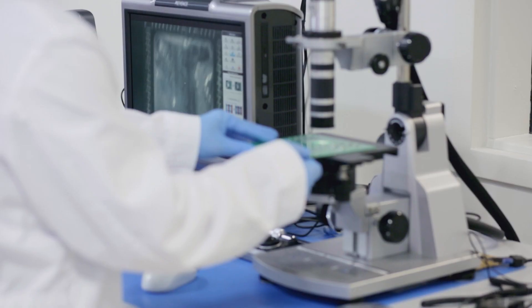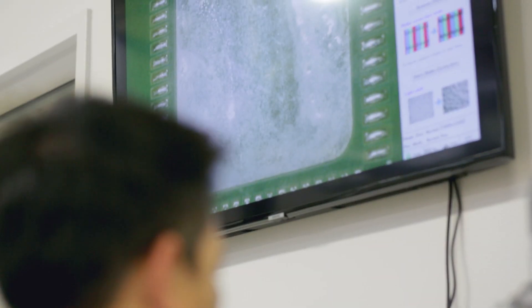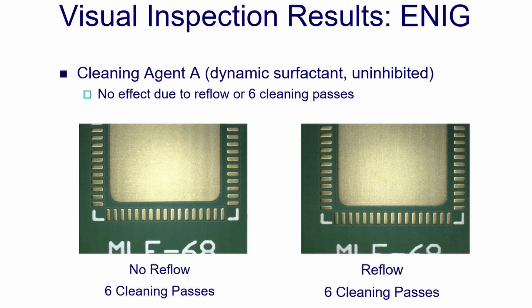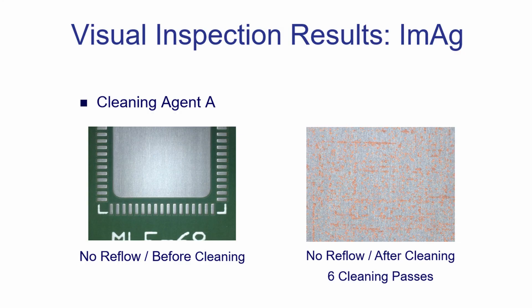After cleaning all the surface finishes with the various chemistries, various analytical tests were also conducted. The first test conducted was visual inspection, and during visual inspection under a microscope, it was found that all the cleaning agents were fully compatible with both the ENIG as well as the Immersion Tin platings. With Immersion Silver, it was found that three of the chemistries were fully compatible, whereas the alkaline uninhibited surfactant-based chemistry started to remove some of the plating, especially after six passes through the cleaning process.